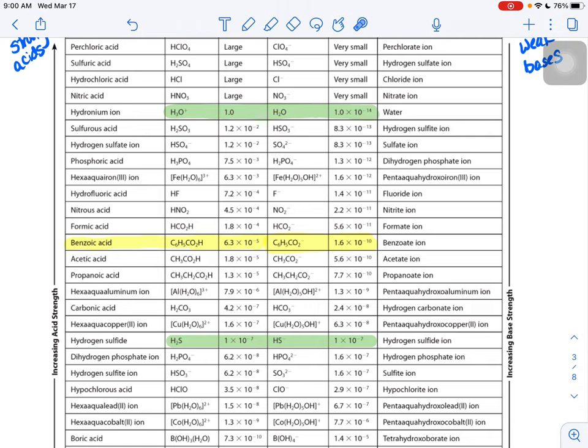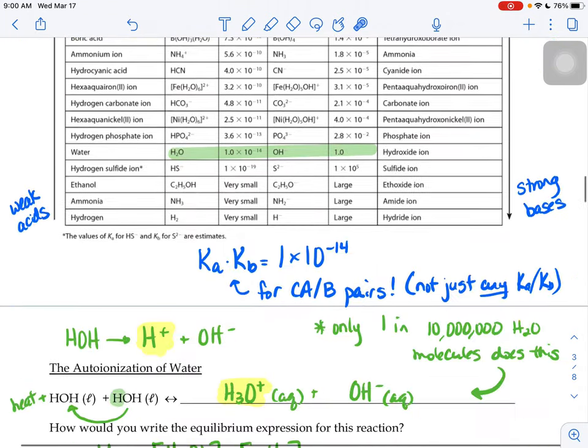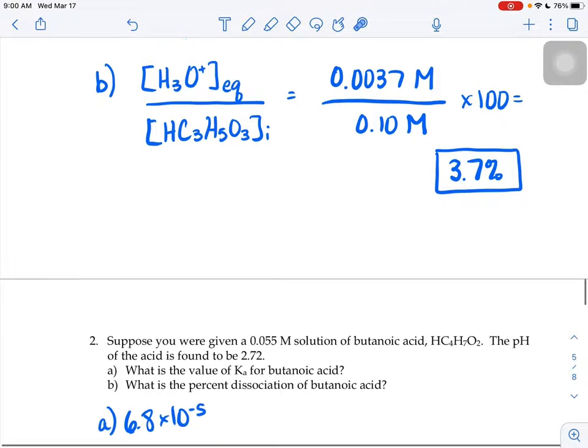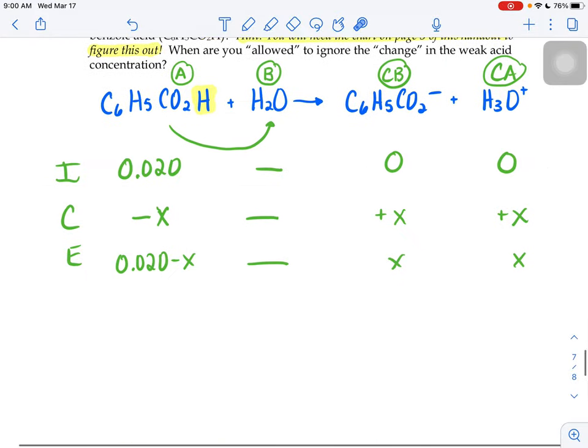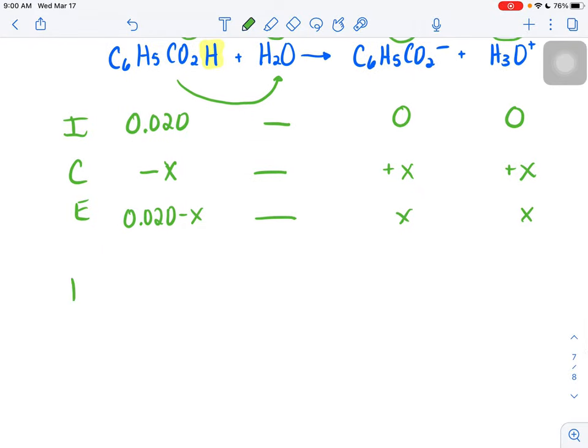6.3 times 10 to the negative 5, so let me jot that information down here. My Ka is 6.3 times 10 to the negative 5.